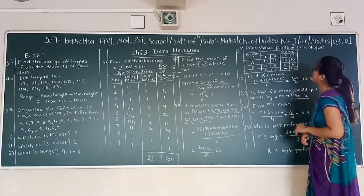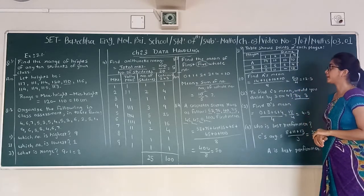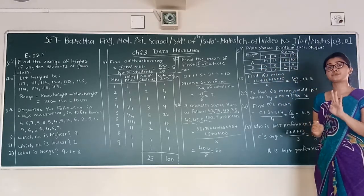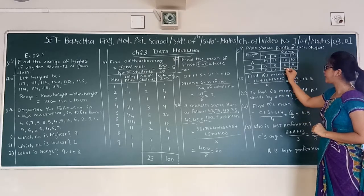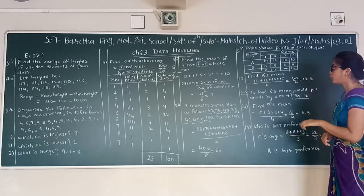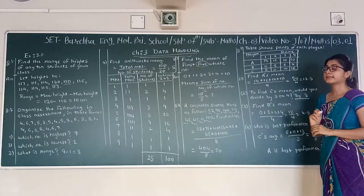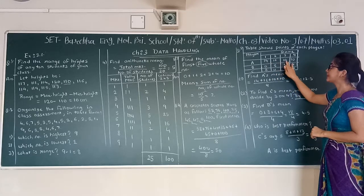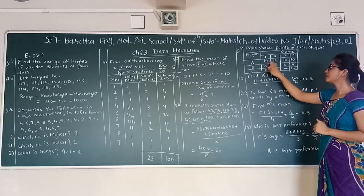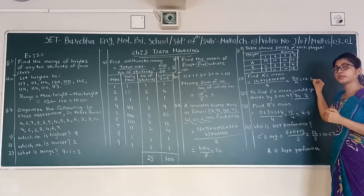Question number 5: the table shows the points of each player. There are 3 players — A, B, and C — and each has played 4 games. However, player C has a dash for the third game, meaning he did not play that game. To find A's mean, we add 14, 16, 10, and 10, then divide by 4 because there are 4 games. The total is 50, so 50 divided by 4 equals 12.5.